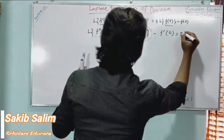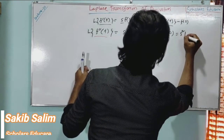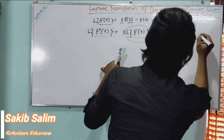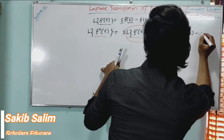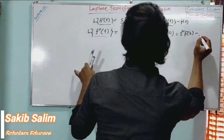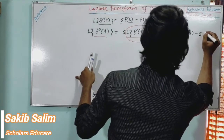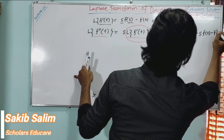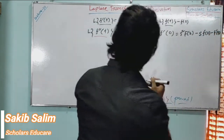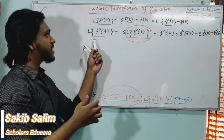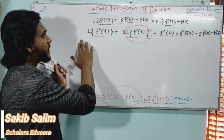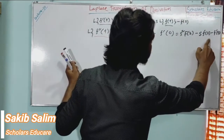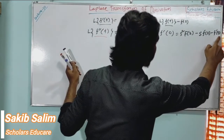For the second derivative, the result is s·F(s), so s²·F(s) minus s·f(0) minus f prime of 0. So the Laplace Transform of the second derivative is s²·F(s) minus s·f(0) minus f'(0).